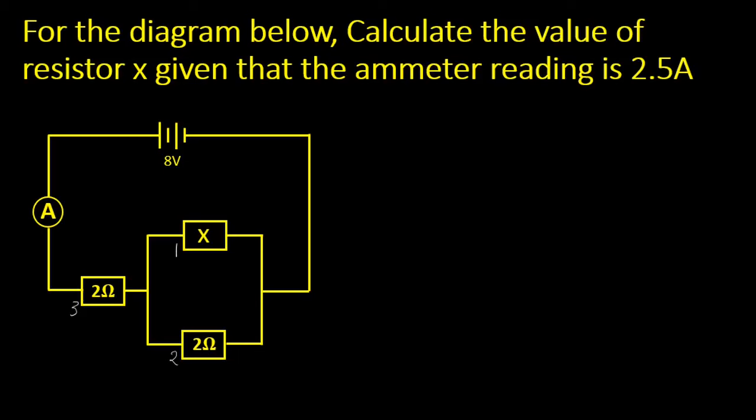It's important to note that resistor one and two are connected in parallel, while the sum of these two resistors will have the connection with three in series. Since we've been given the ammeter reading, we know that by Ohm's law, voltage equals current multiplied by resistance.